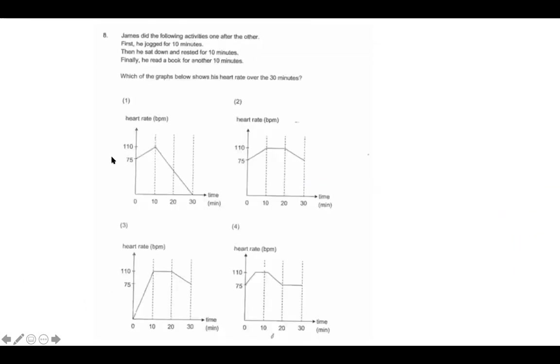Okay, James did the following activities one after the other. First, he jogged for 10 minutes. Then he sat down and rested for 10 minutes. And finally, he read a book for 10 minutes, which the graph shows his heart rate over the 30 minutes. Okay, so let's look at some of the graphs. I'm going to start with three because if your heart rate is zero beats per minute.